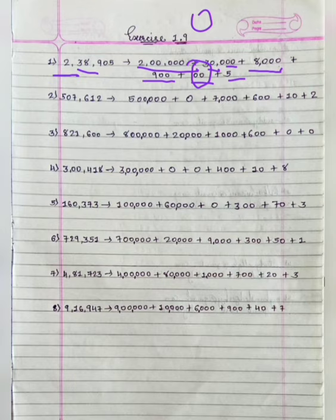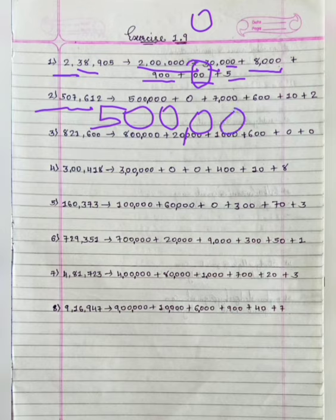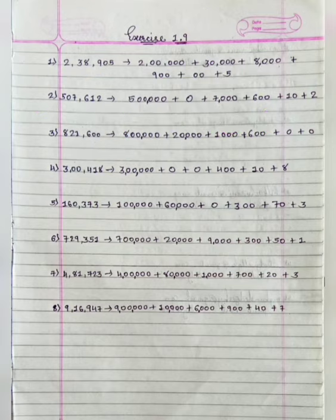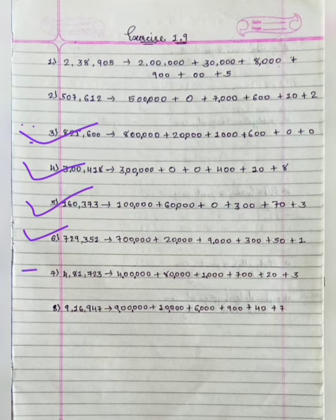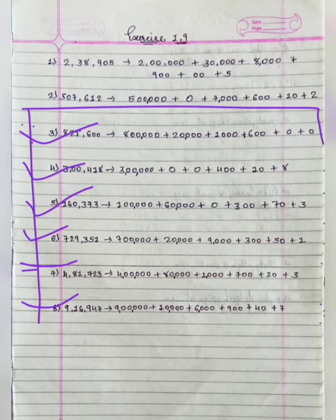In the same way, the next number is 5,07,612. We will write here: 5,00,000 plus 0 plus 7,000 plus 600 plus 10 plus 2. In the same way, you can see the remaining answers and write exercise 1.9 in your maths notebook.